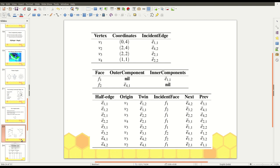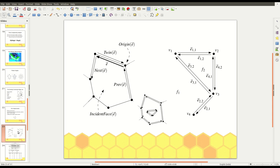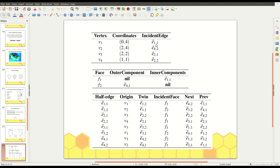For example, for V1, the incident edge is E11 or E12. So, the representation is stored here. In the same way, we will store the information for all these vertices.